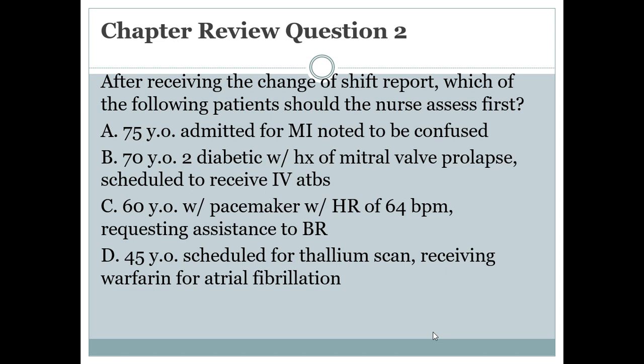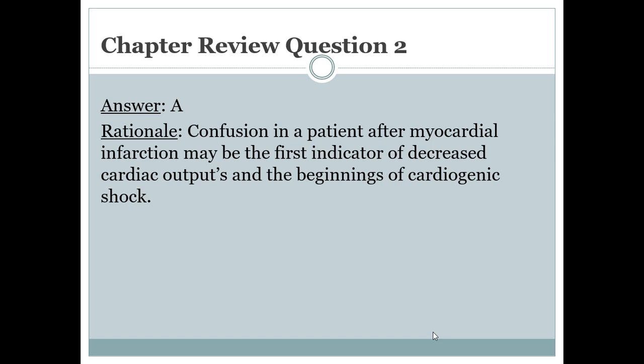Review question 2: after receiving the change of shift report, which patient should the nurse assess first? A 75-year-old admitted for an MI noted to be confused, a 70-year-old type 2 diabetic with a history of mitral valve prolapse scheduled to receive IV antibiotics, a 60-year-old with a pacemaker with a heart rate of 64 requesting bathroom assistance, or a 45-year-old scheduled for a thallium scan on warfarin? The answer is A — confusion after an MI may be the first indicator of decreased cardiac output and the beginning of cardiogenic shock.